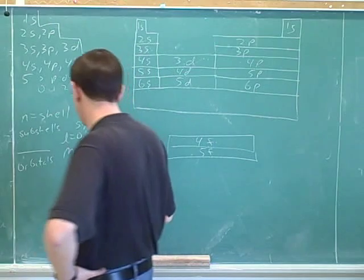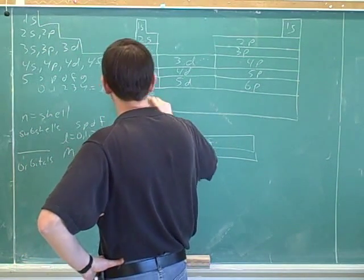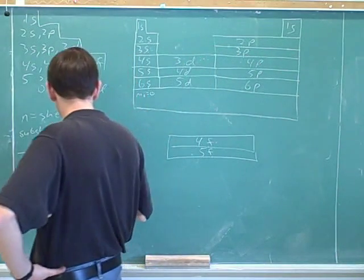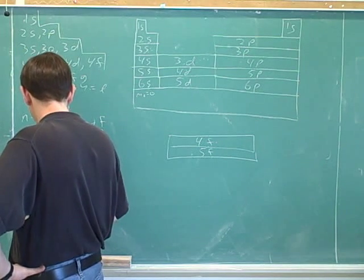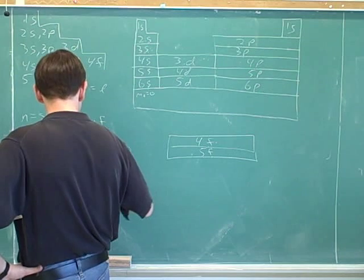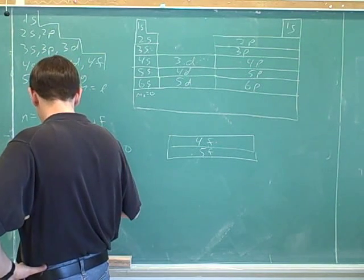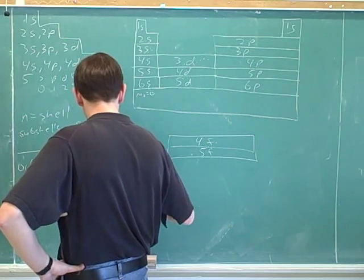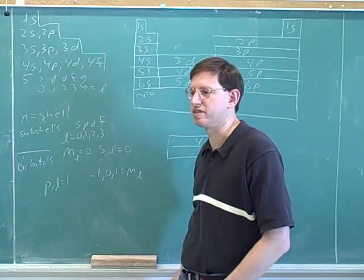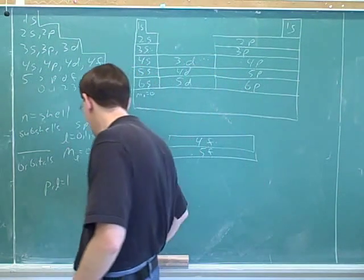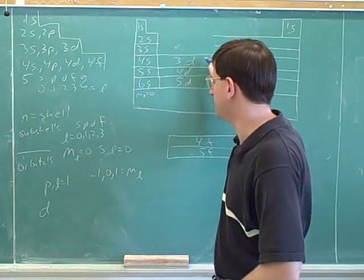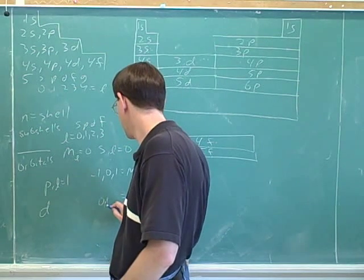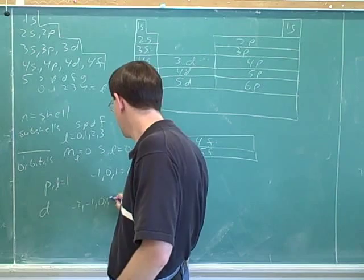In the p block there are three orbitals, so to get three m sub l values centered at zero, they go from negative one to positive one. In the d block we need five orbitals, so the m sub l values go from negative two to positive two: negative two, negative one, zero, one, and two.